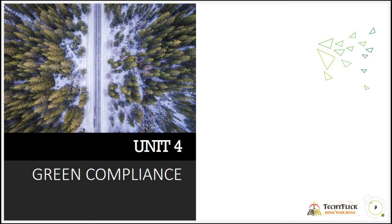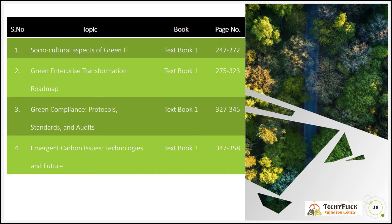Unit four is Green Compliance, with four topics. Sociocultural Aspects of Green IT is from textbook one, pages 247 to 272. Green Enterprise Transformation Roadmap is from textbook one, pages 275 to 323. Green Compliance protocols, standards and audits is from textbook one, pages 327 to 345. The last topic, Emergent Carbon Issues, Technologies and Future, is from textbook one, pages 347 to 358.